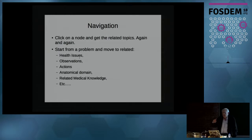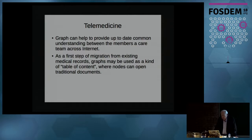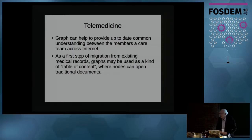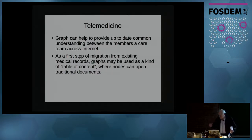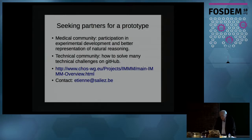Clicking on a node will move to related topics, and a right-click will make it possible to modify or add information. Of course, medical records today are not done that way, but why not make a transition and use a graph as a kind of table of contents? The node may contain a discharge letter — that is the idea. I am looking for partners to help with this project.